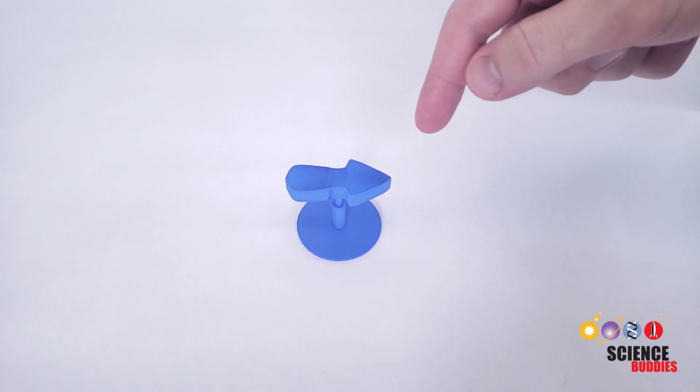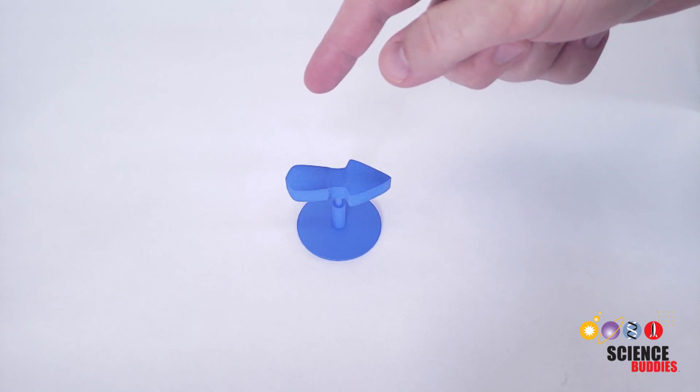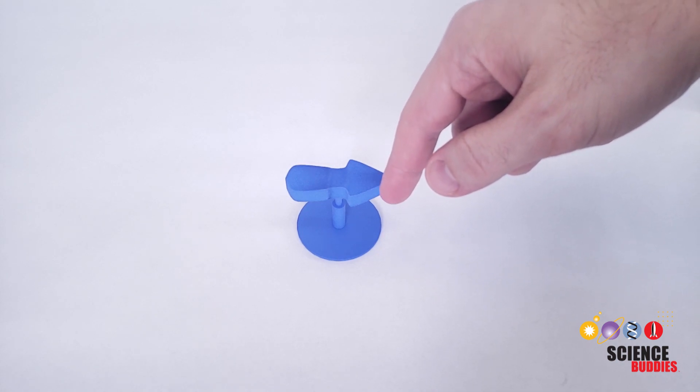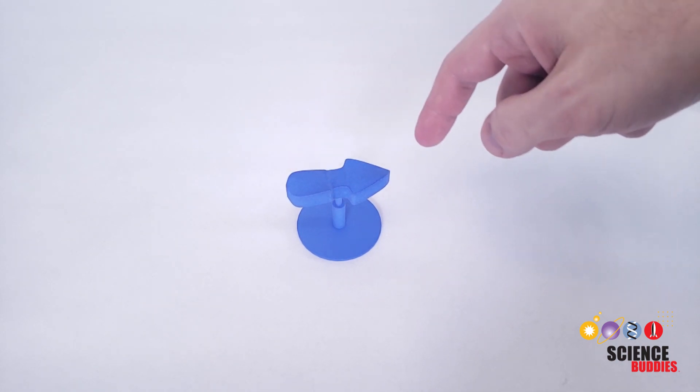This arrow is pointing to the right. If I spin it around, it should point to the left. Well, that's odd. It's still pointing to the right.